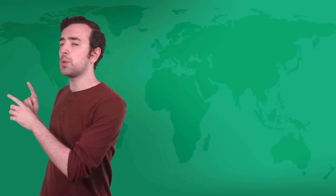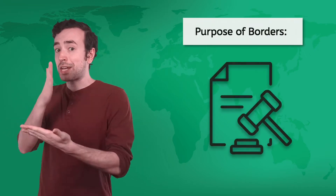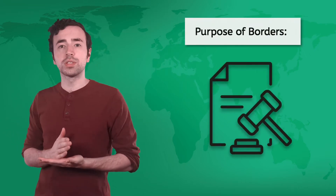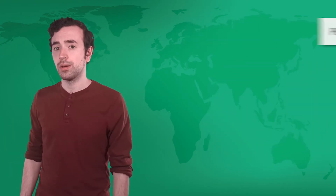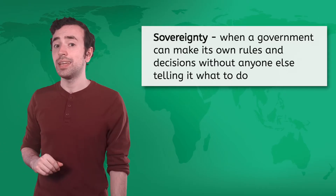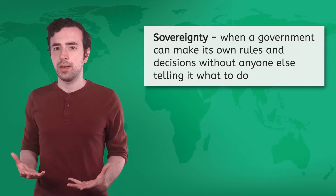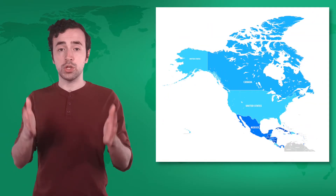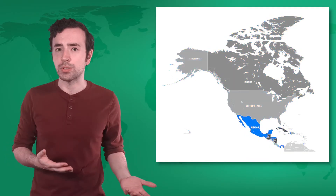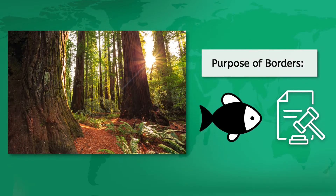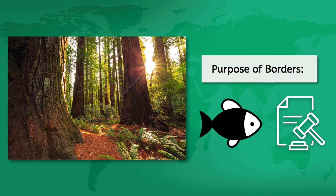Think back to the dispute with my neighbor. Establishing a clear border would allow us to make rules and decisions about our properties without anyone else telling us what to do. You may remember that when states have this power it's called sovereignty. Laws enforced within U.S. borders, for example, don't apply within Mexico's borders, and vice versa.